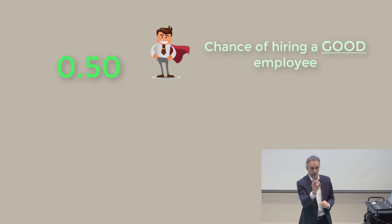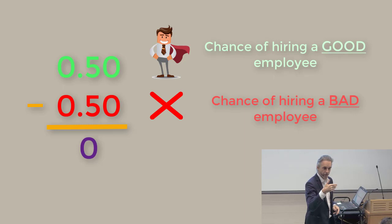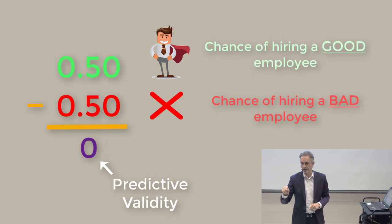So let me explain that. 0.50 minus 0.50, if you subtract one from the other, you get zero. So the predictive validity of selection by chance is zero. 0.50 minus 0.50 equals zero. That's the predictive validity of chance.